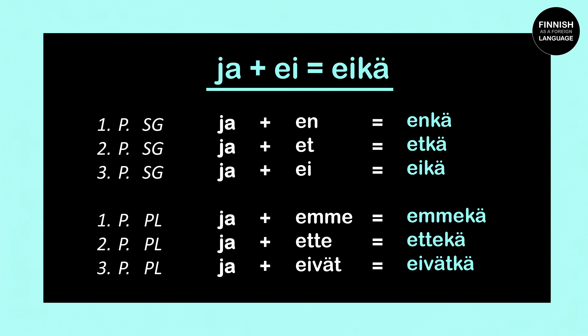Now let's learn all the forms of EIKE for each personal pronoun. First person singular: ja plus en — enkä. Second person singular: ja plus et — etkä. Third person singular: ja plus a — eikä. First person plural: ja plus emme — emmekä. Second person plural: ja plus ette — ettekä. Third person plural: ja plus eivät — eivätkä. So the form of eikä we use depends on the personal pronoun.